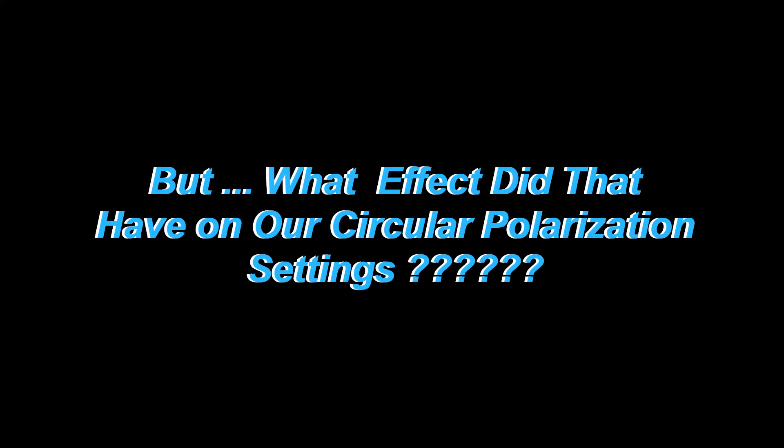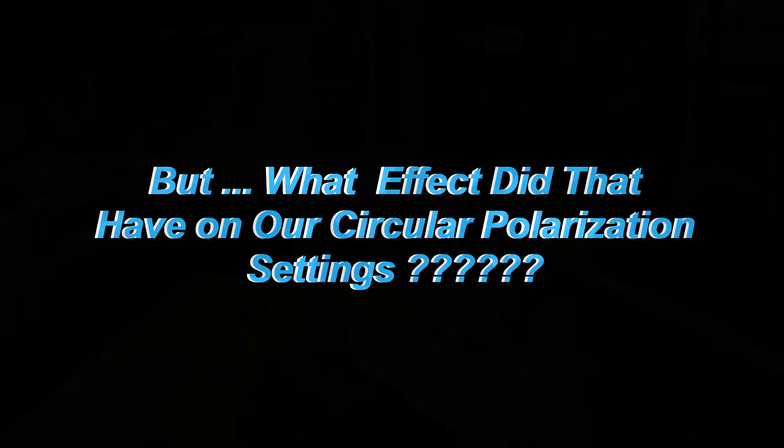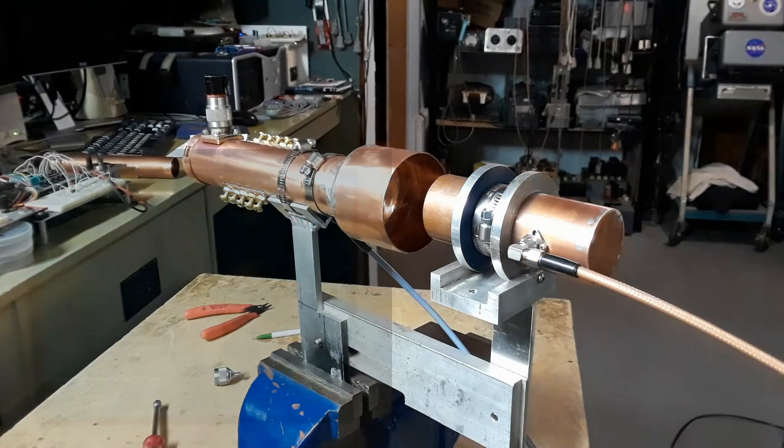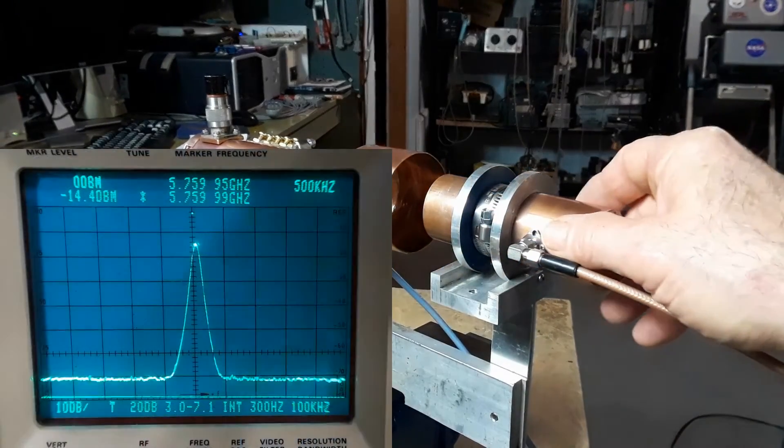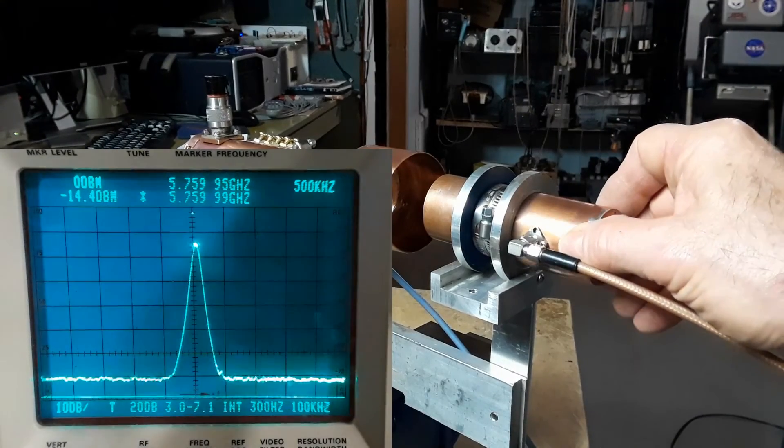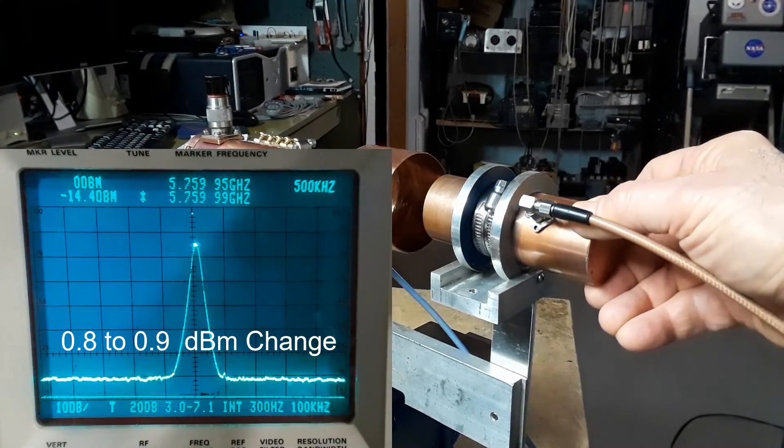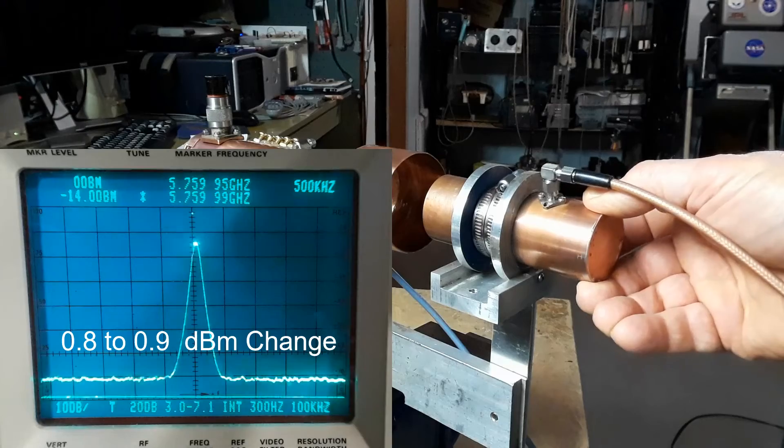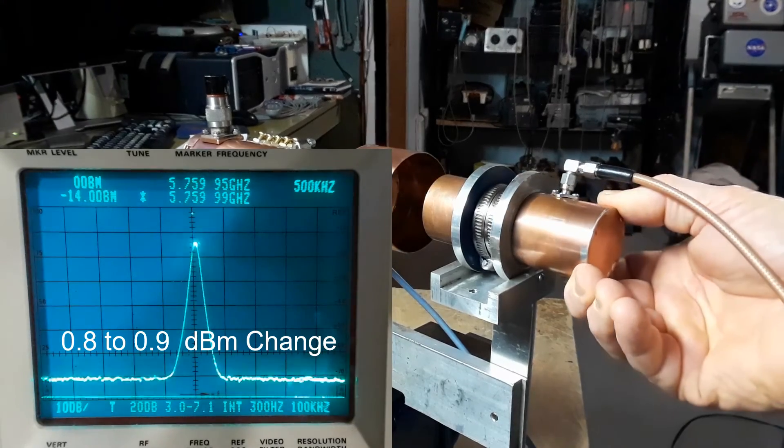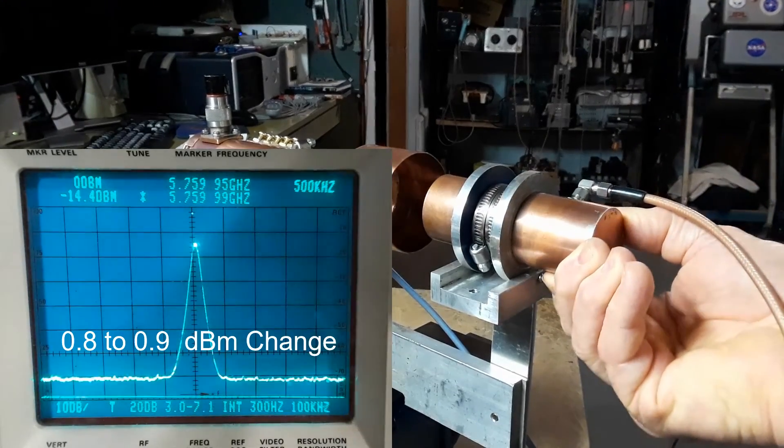So inquiring minds want to know, so let's go back and have a look. So I'll test it again and we're seeing still an area of 0.8 to 0.9 of a dBm change. Probably get it better if I go back and forth, back and forth, but I have to stop here somewhere.